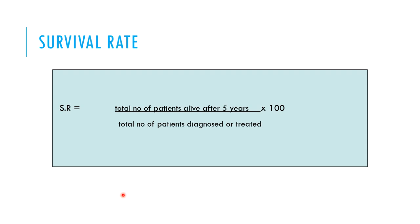Survival rate is calculated for survivors of long-term disease, particularly cancer patients. It is: the total number of patients alive after five years of treatment for a particular disease, divided by the total number of patients diagnosed or treated with that particular cancer. Survival rates are used for comparisons across different cancer types and across different age groups.